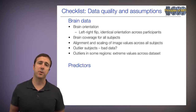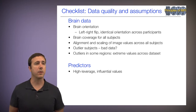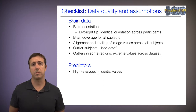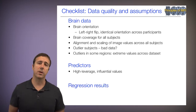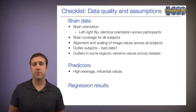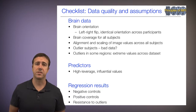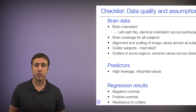We'll examine the predictors as well, and mainly we're going to look for high leverage influential values among the predictors. Then we'll look at the regression results in three ways: we'll look for negative controls, we'll look for positive controls, and we'll look for resistance to outliers.